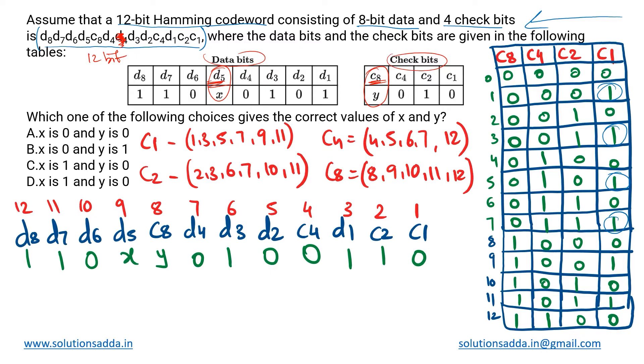For whichever positions a particular check bit is set, for those positions it will be taking care of. It will ensure that there is an even parity in those positions. As we can see, c1 takes the value one at odd numbers: one, three, five, seven, nine and eleven.